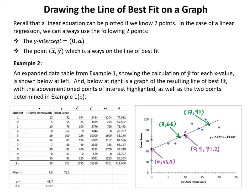Recall that a linear equation can be plotted using at least two points. For a linear regression we can use the y-intercept (0, a) and the point (x-bar, y-bar), which always lies on the line of best fit. In example 2, an expanded data table showing y-hat for each x value is shown, along with a graph of the resulting line of best fit with those points of interest highlighted, as well as the two points from example 1 part b.